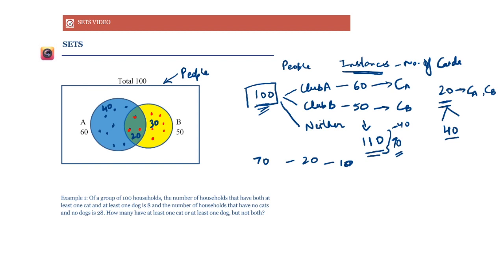Overall, we have 60 people in club A and 50 in club B. We have 40 people only in club A, 20 in both, and 30 only in club B — which means we are left with 10 people. Where are they? They lie outside these circles because they belong to neither club. So we put 10 outside the two circles, in the area inside the rectangle but outside both circles.